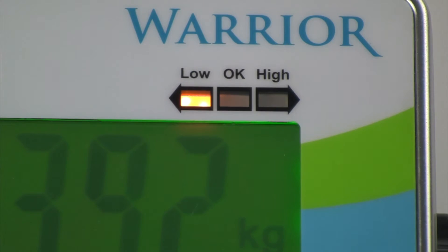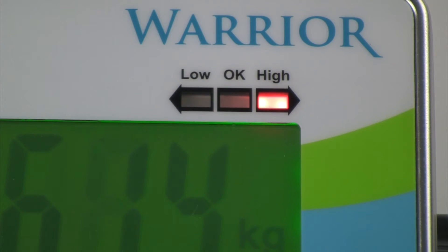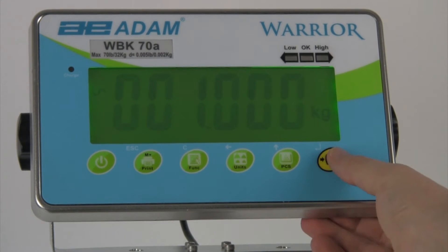Colored LED lights help speed up check weighing applications by indicating under, acceptable, and over limits.